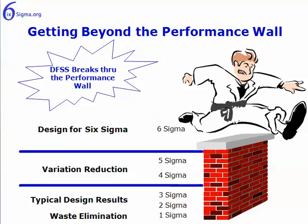I do refer to DMADV interchangeably as DFSS — Design for Six Sigma. If you're out reading on Lean Six Sigma you'll come across DFSS or Design for Six Sigma. DMADV is also known as NPSI, or New Product Service Introduction. As we go through the Six Sigma dot org training we'll see different aspects of the DMADV methodology introduced and integrated.